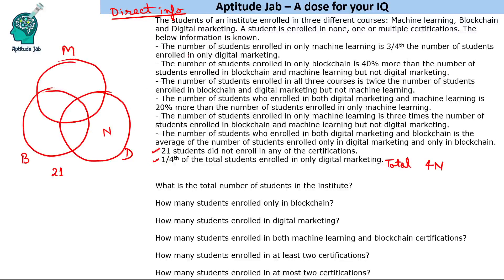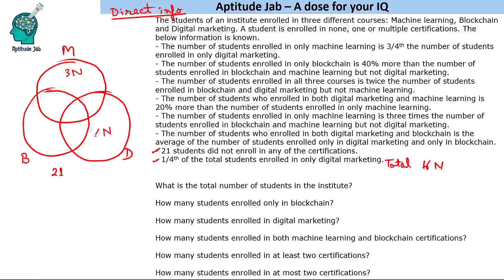The first statement says the number of students enrolled only in Machine Learning is three fourths of the number enrolled only in Digital Marketing. Only Machine Learning would become 3n/4. To avoid this fraction, I'll multiply everything by 4, assuming the total to be 16n. Hence Digital Marketing becomes 4n and Machine Learning becomes 3n.